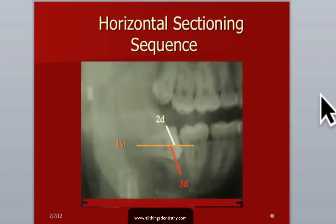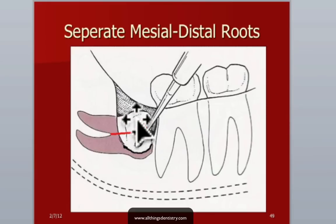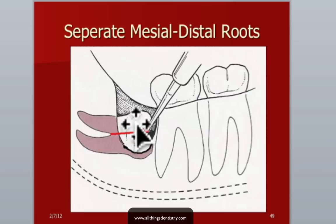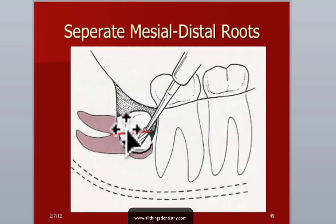Here's an artist graphic of how you section that. I use the crown or the root as a guide for the bur — kind of like a fence on a table saw. You lean the bur against that and use it to remove the bone and dissect it. You make the outside of the cut a little wider than the inside, then seat your instrument right down close to the furcation at the bottom of the pulp floor.